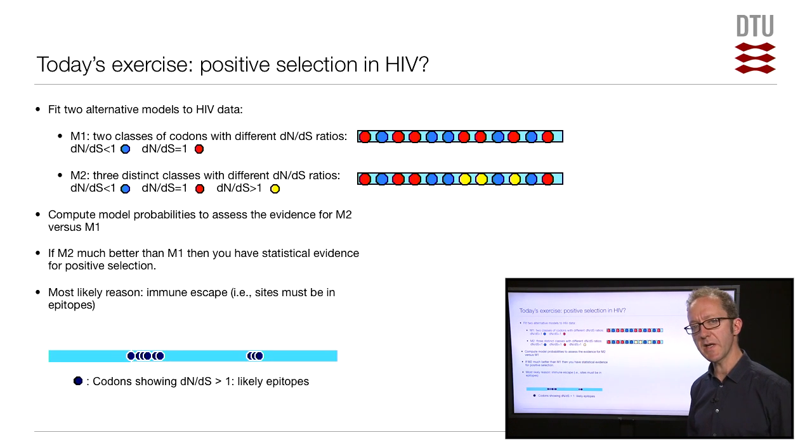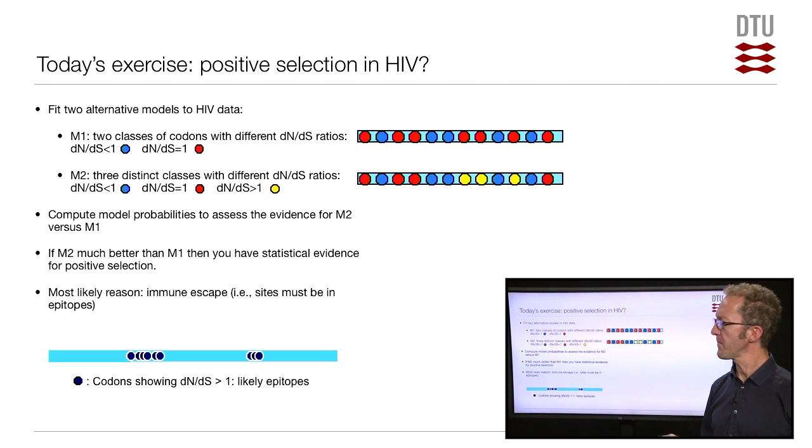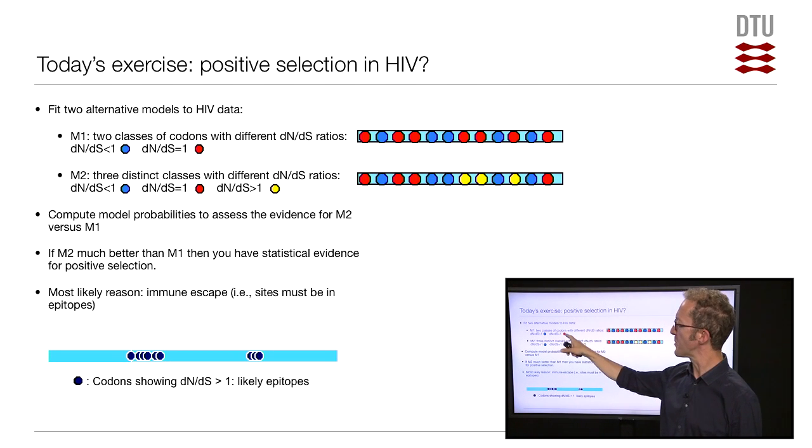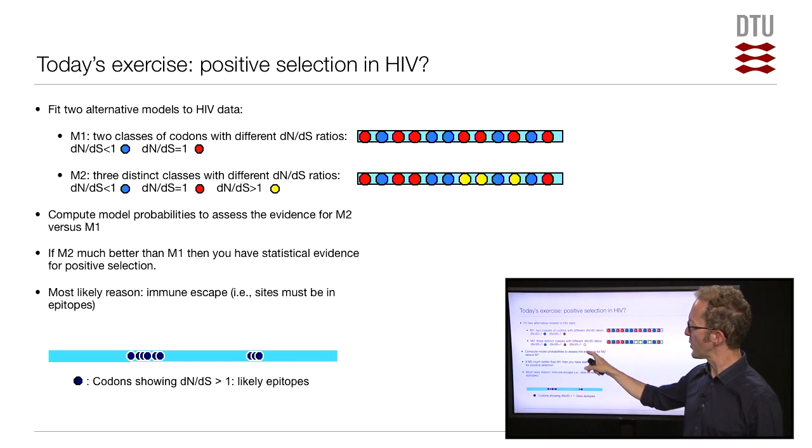That was model 1. The second model we will fit to the data is like the first model, except it has an additional class of codons. A class of codons with a DN-DS ratio larger than 1, indicating positive selection. If we fit that model to the data, then some of the codons that were previously presumably in the DN-DS equal 1 class will now be found perhaps to be in a class of codons with a DN-DS ratio larger than 1. Again, we don't know ahead of time which codons go where. That's what we fit from the data. We don't know ahead of time what the average DN-DS ratio would be here, so that's also something we fit from the data.